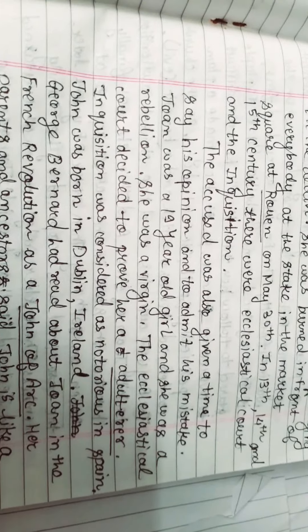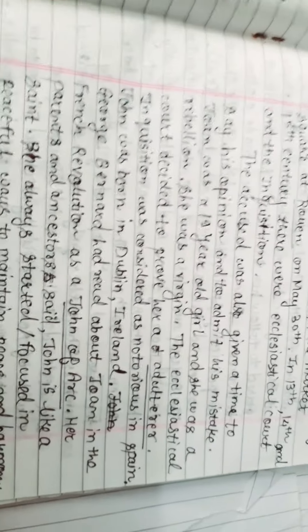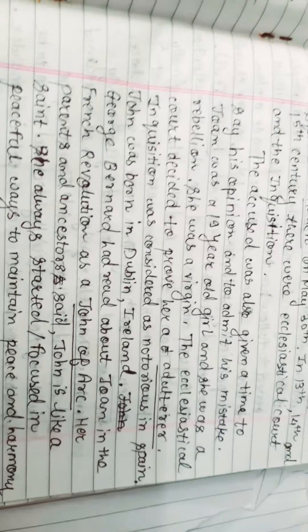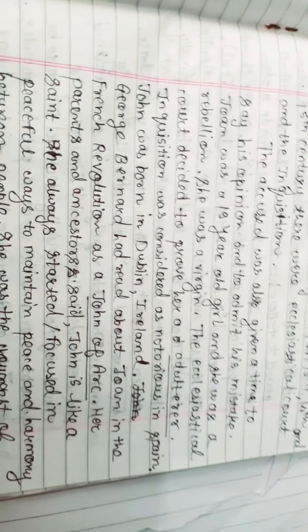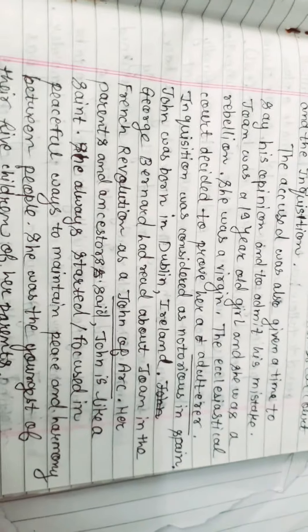The accused was also given time to say his opinion and to admit his mistake. Joan was a 19-year-old girl and she was a rebel. She was a virgin. The ecclesiastical court decided to prove her as an adulterer.